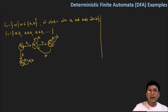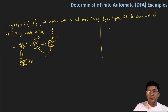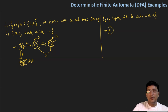Now let's say we have another language L2 that says that the string starts with B and ends with A. For this, it will be very much similar to what we have made here. So let's say we have some Q4 state. And at the Q4 state, if I get a B, I should move ahead because the smallest string that will be accepted here will be BA. So with BA, you should reach the final state. This is Q5, and let's say this is Q6.